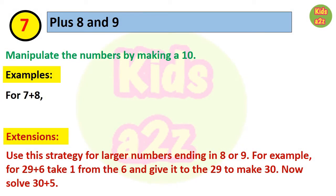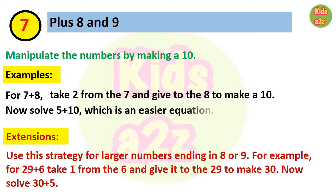Next strategy is plus 8 and 9. That means taking some away from 1 addend and giving it to 8 or 9 to make a 10. For 7 plus 8, we know that 8 plus 2 equals 10. So we will take 2 from 7 and give it to 8 to make 10. Now the new equation will be 5 plus 10, which is a much easier equation.